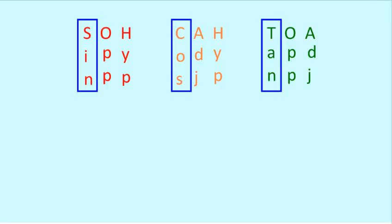So here it is again, just typed up neater. SO means sine is opposite over hypotenuse. Cosine is adjacent over hypotenuse. Tangent is opposite over adjacent.